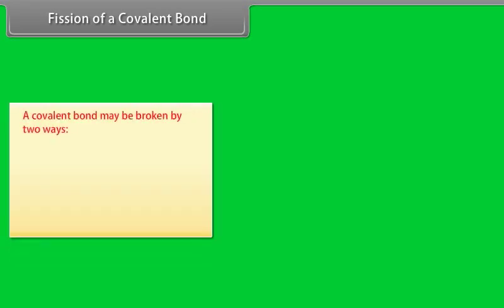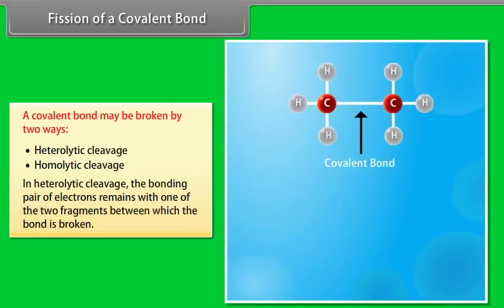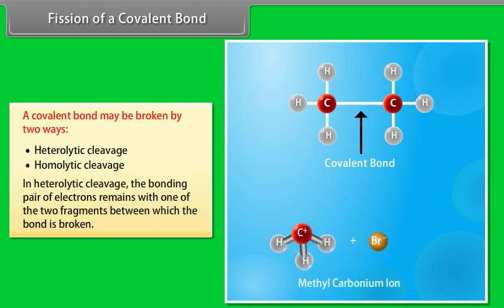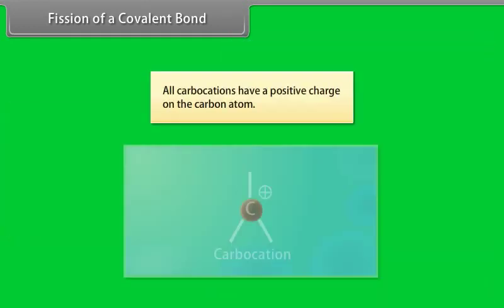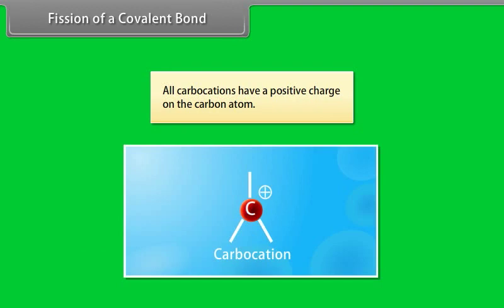A covalent bond may be broken by two ways: heterolytic cleavage and homolytic cleavage. In heterolytic cleavage, the bonding pair of electrons remains with one of the two fragments between which the bond is broken. All carbocations have a positive charge on the carbon atom.